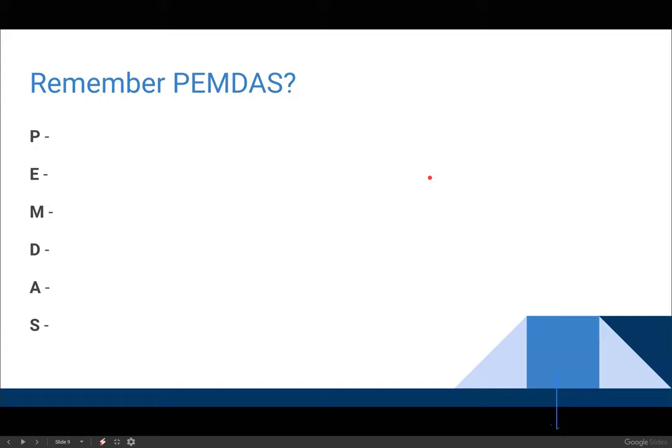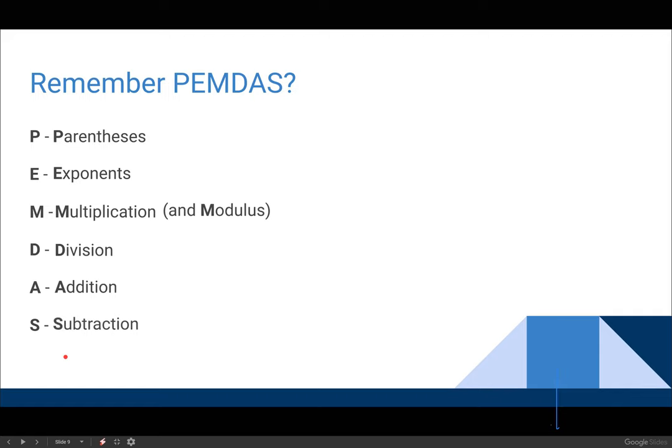So with these two types of operators in mind, just keep that tucked away in there. Let's remember PEMDAS. Who remembers what our PEMDAS stands for? What does the P mean? Parentheses. Parentheses. What is E? Exponents. Exponents. What is M? Multiplication. Multiplication. And what did we just learn today? Division. And modulus. Modulus, which also starts with an M. D, I heard, is division, correct. What is A? Addition. Addition. And finally? Subtraction. Subtraction. All right. Well done, everyone. We all remember our order of operations.